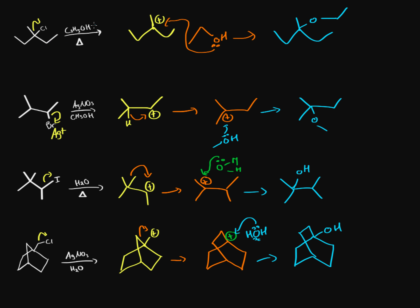To summarize the four SN1 examples: the first was a regular SN1 with a carbocation and direct nucleophile attack; the second involved a hydride shift rearrangement; the third involved a methyl shift rearrangement; and the fourth involved a ring expansion, which is another type of rearrangement.